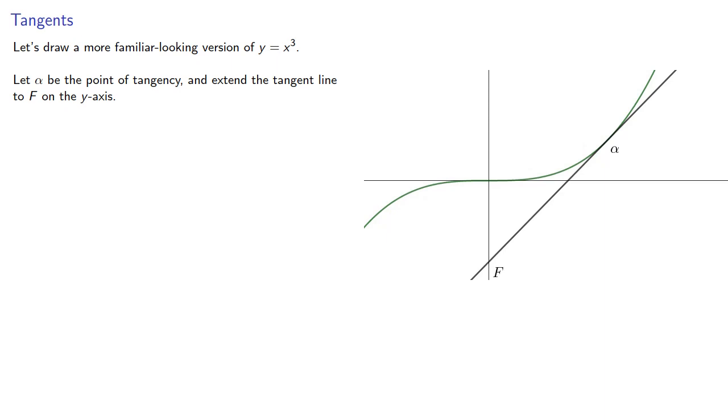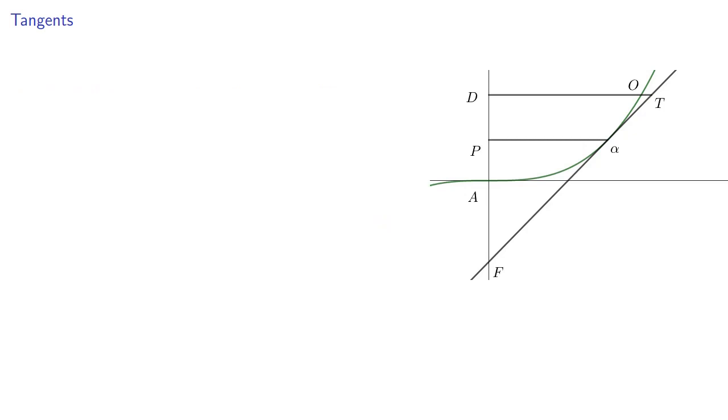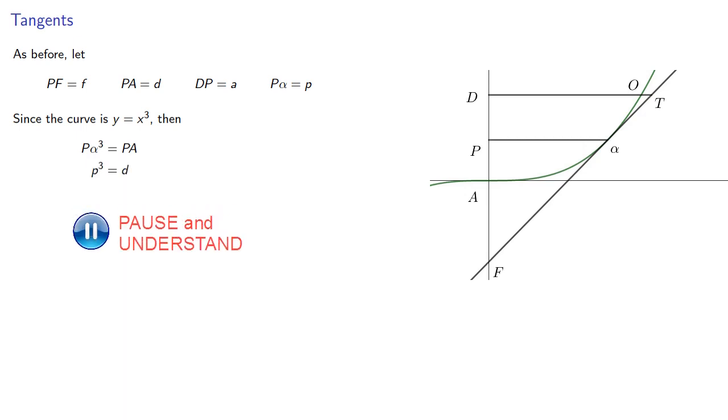Now our goal is to find where this point F is, because if it's too close or too far away, the line clearly isn't tangent. So let's draw in our line drawn ordinate-wise, and consider some point T beyond alpha. And we'll draw a line ordinate-wise to the curve as well, and label some points. Now as before, we'll let PF be F, PA be D, DP equal to A, and P alpha equal to P. Since the curve is Y equal to X cubed, then P alpha cubed is PA, and so P cubed equals D. DO cubed, that's D to this point O on the curve, well that's going to be DA. And so DO cubed is D plus A.